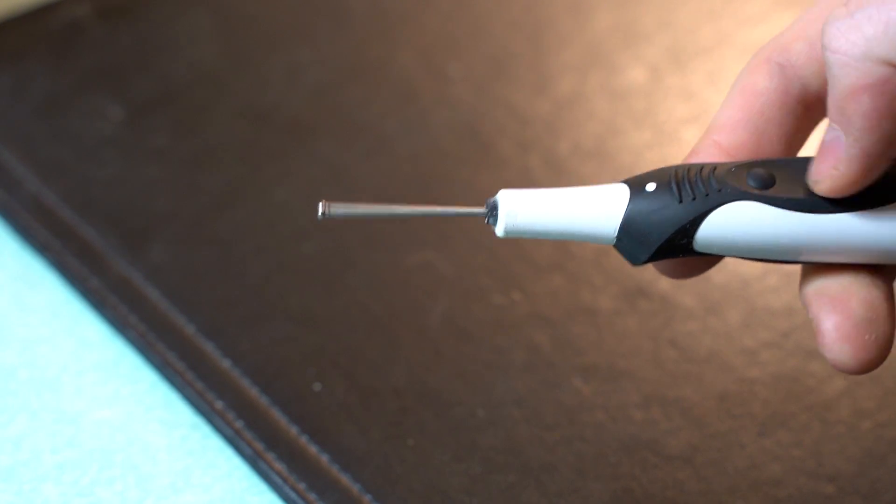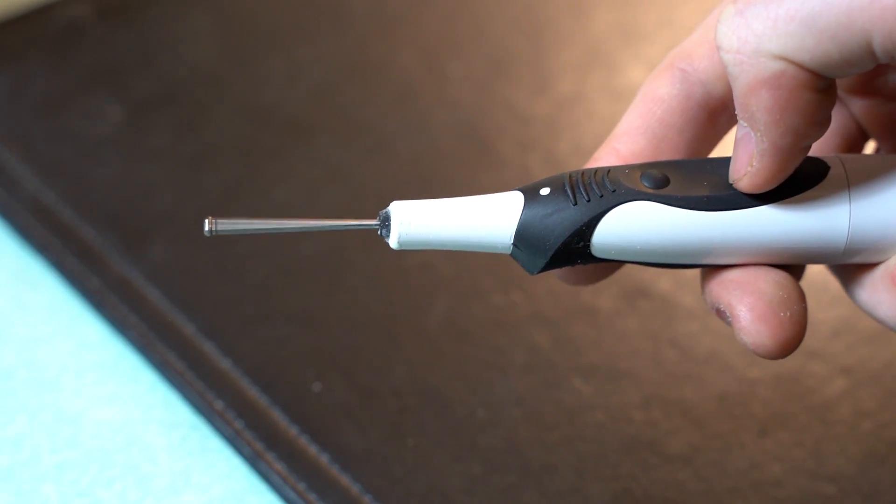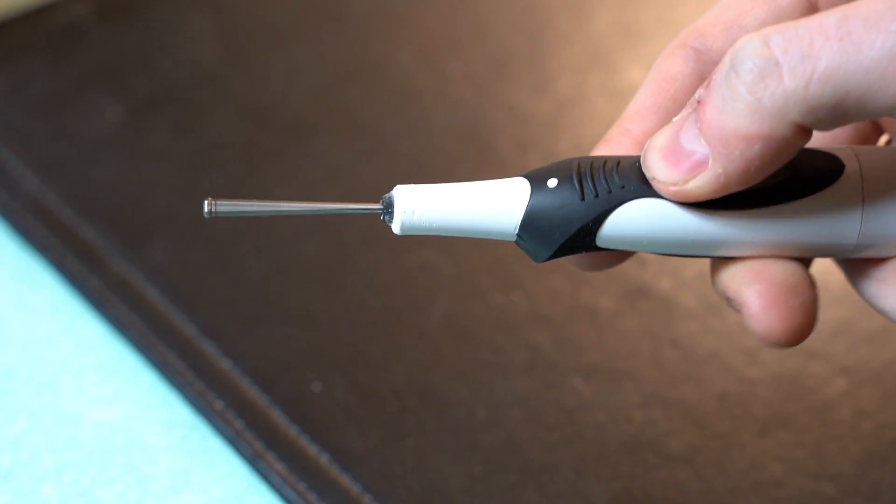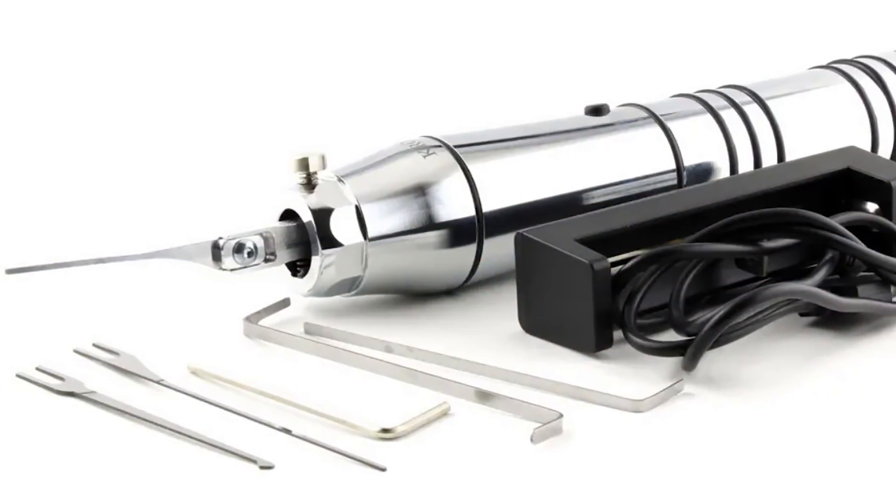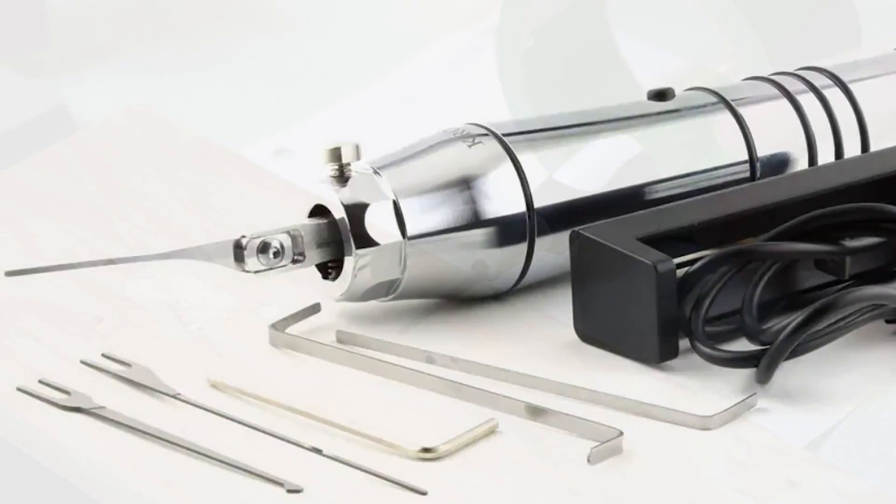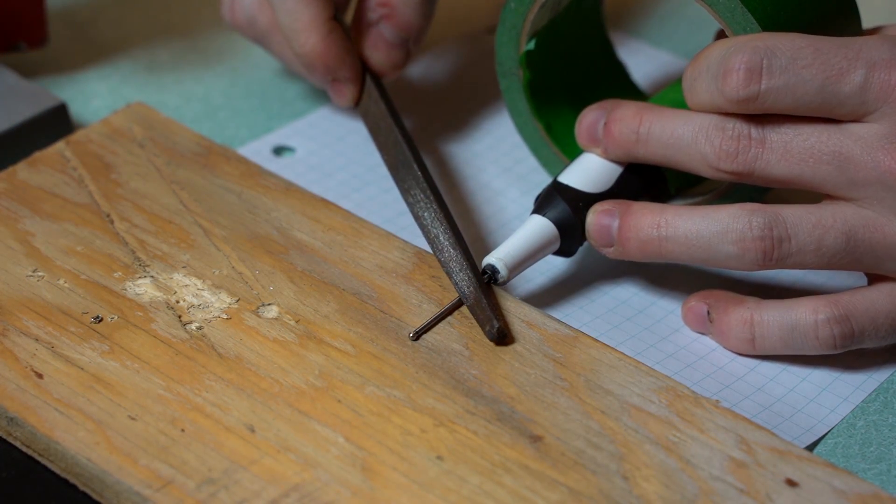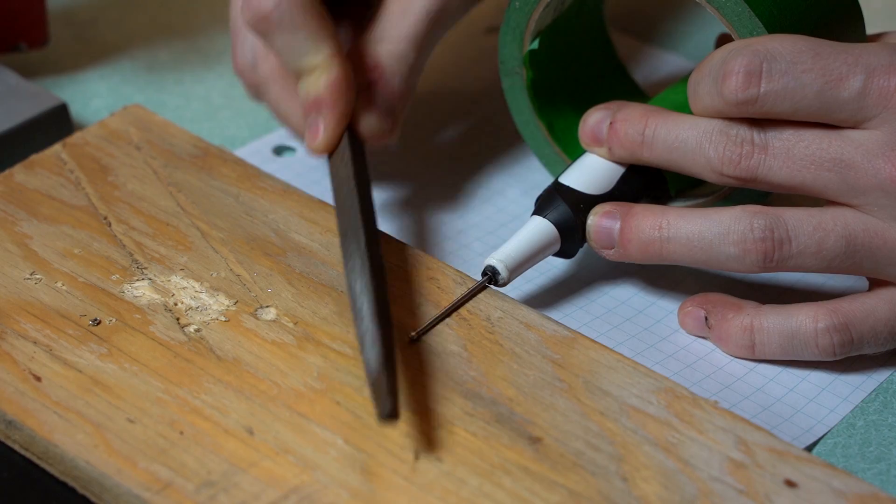The last step is filing down the metal piece so it resembles the standard straight tip of an electric lock pick. I used metal files but a rotary tool could also be used.